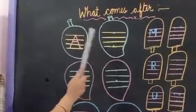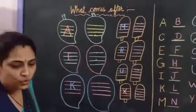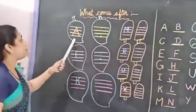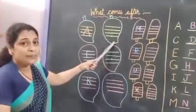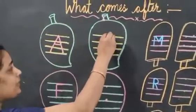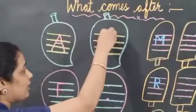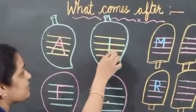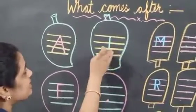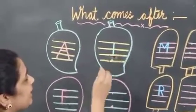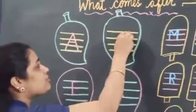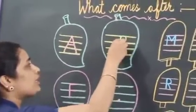What is this? B for ball. A for apple. How many of you have written here? B for ball. Make one standing line. Which line is this? Standing line.